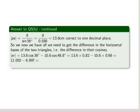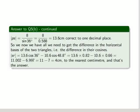And we get 11.002 minus, which is almost 11, less 6.997, which is almost the same as 11 minus 7, and which is 4 centimetres to the nearest centimetre. And that's the answer.